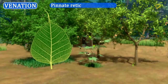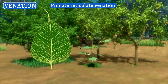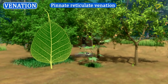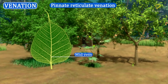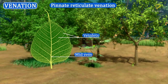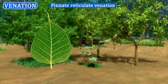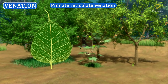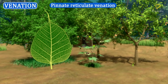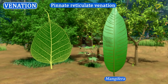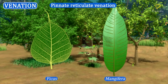Pinnate reticulate venation: In this venation, the leaf has only one mid-vein. The veinlets form a network. This venation is seen in the leaves of Mangifera and Ficus.